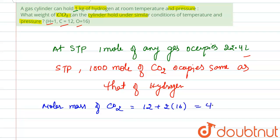So 44 grams is the molar mass of CO2. And if we talk about 1000 moles of CO2, that is equal to 44 times 1000, that is equal to 44,000 grams, and you can also write as 44 kg CO2.